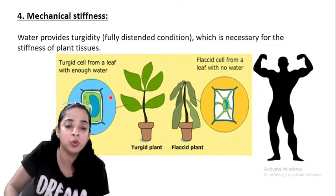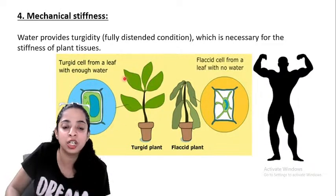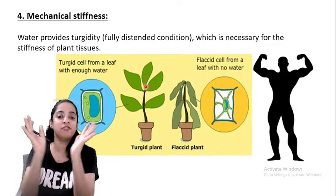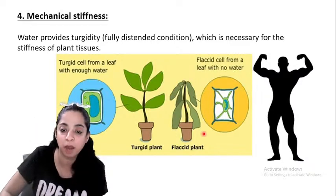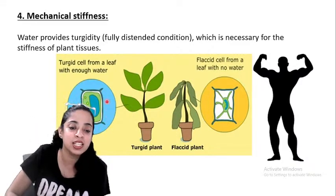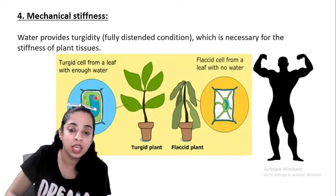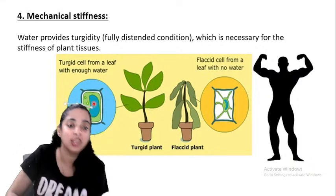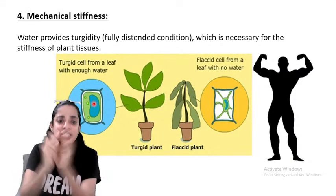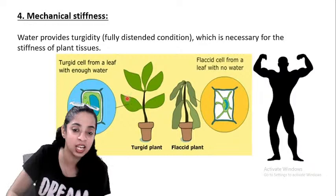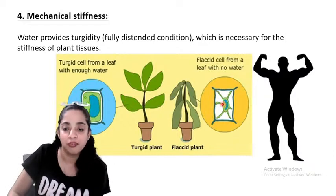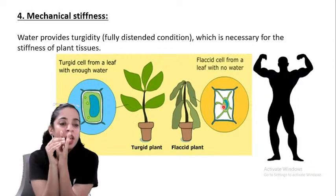See this picture — this is how a turgid plant looks. All the leaves are in a distended condition. If you see the cells carefully, there is a lot of water in the cell. When water is present, the leaf cell is in a turgid condition. This is a turgid cell. A flaccid cell has very little water and looks shrunken.